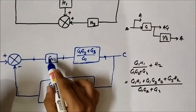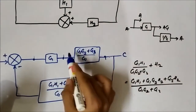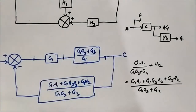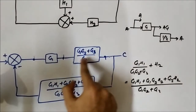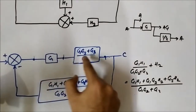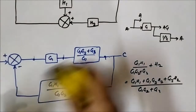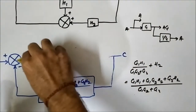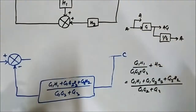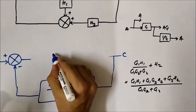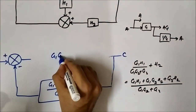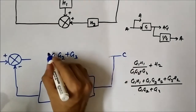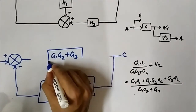Again these two blocks are in cascade — G1 multiplied by G1/(G1·G2 + G3). G1 in the numerator and G1 in the denominator will get cancelled, so it will become simply G1·G2 + G3, or written as G1(G2 + G3).